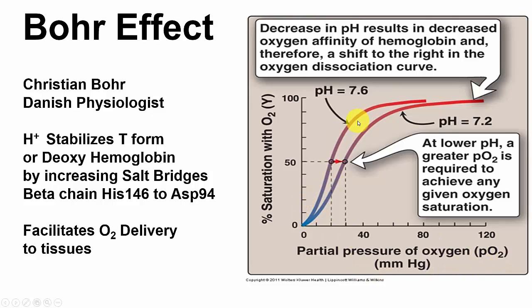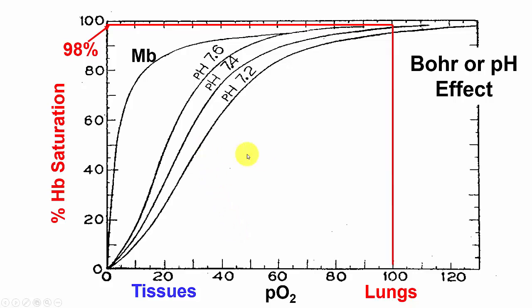At pH 7.6 in the lungs, hemoglobin has a higher affinity for oxygen. Out in the tissues at pH 7.2, the curve is pushed to the right, lowering the affinity for oxygen and resulting in better delivery of oxygen to the tissues.